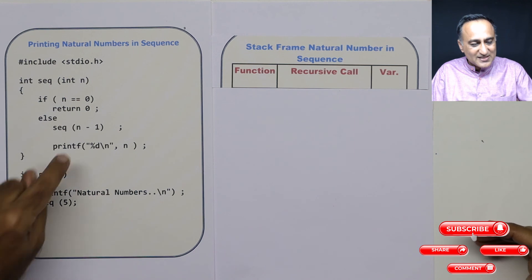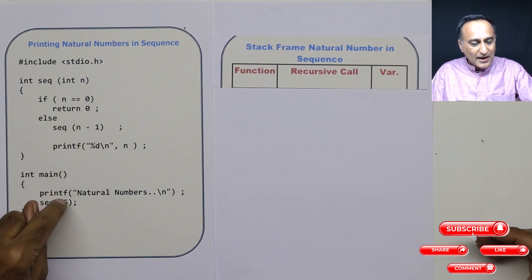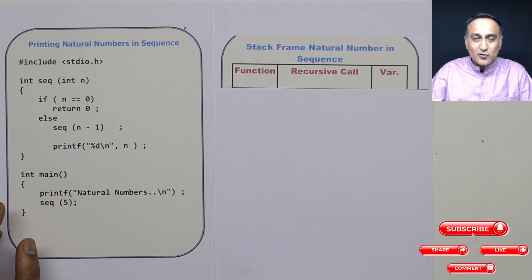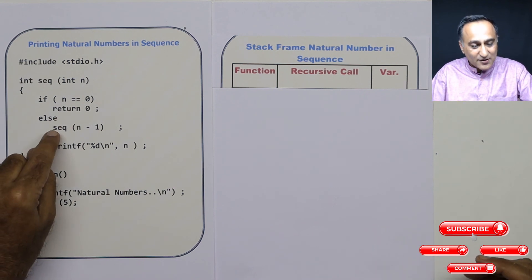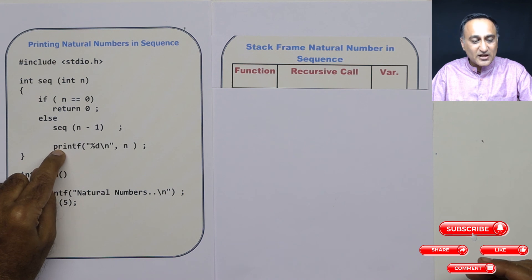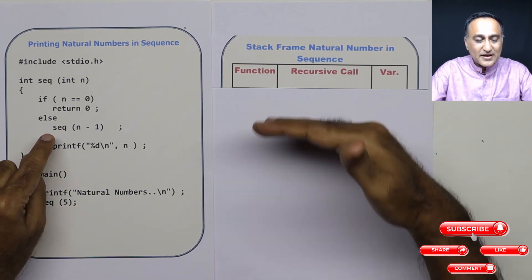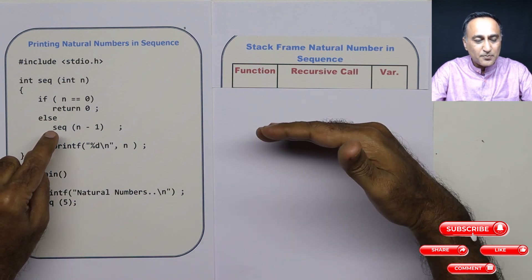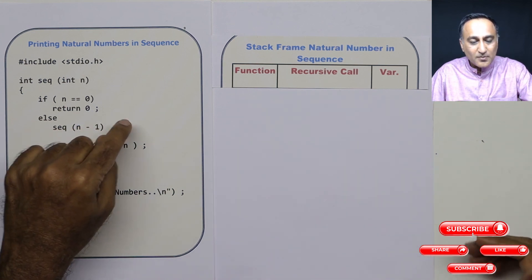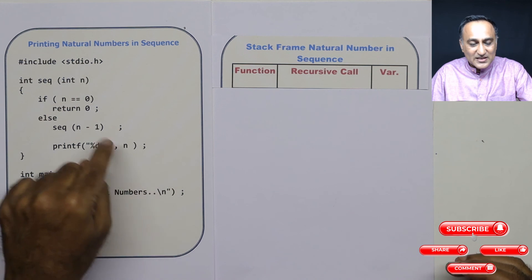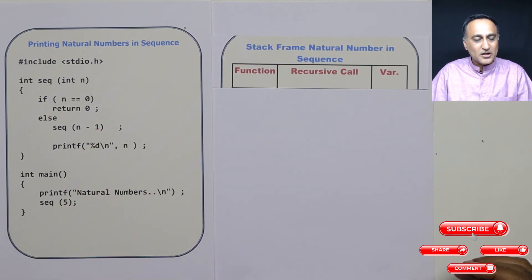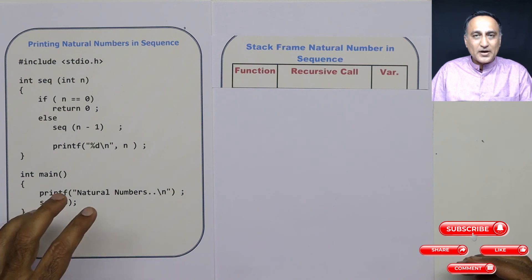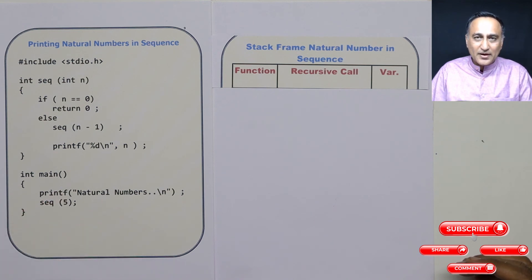The important thing to understand is this particular call. Since I want to print from 1 to 5, not 5 to 1, that's why I have sequence first and the printf next — because the stack frame keeps getting built on top. So as the stack frames keep getting pushed, it will allow me to print from 1 to 5 as I am popping the stack frames. Please go and take a look at this program code in the description and try to execute it.